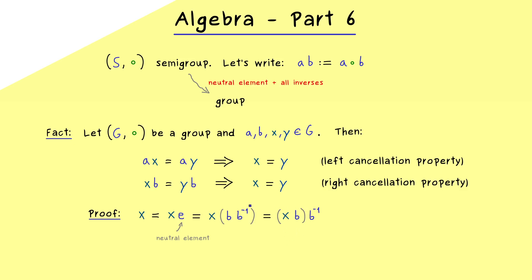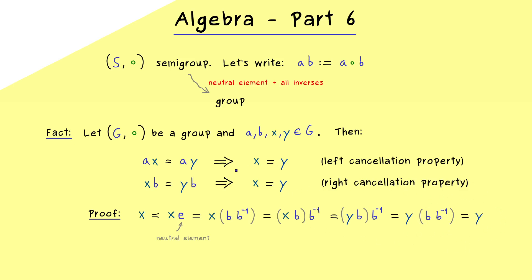Then we can use our assumption that xb equals yb. Using associativity again, we have b times b-inverse, which is e, and we get y on the right. This proves the right cancellation property. The proof of the left cancellation property works exactly the same, just from the other side. The conclusion is: since the inverses exist, we can multiply with them and cancel the element.